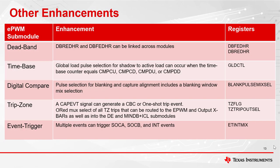A few other enhancements done to Type 5 PWM are: linking deadband rising and deadband falling edge registers across PWM modules; global load can now occur when the time-based counter equals compare C up or down and when compare D is up or down. Within digital compare, the blanking window can now be triggered on a combination of certain events. For trips, there is a capture event signal that can generate a cycle-by-cycle or one-shot trip event. There is an additional signal called trip out that can be routed to the PWM and output crossbars as well as into the diode emulation, minimum deadband, and illegal combinational logic submodules. Within event triggering, Type 5 has been modified such that multiple events ORed together can trigger a start of conversion A, start of conversion B, and interrupt events.